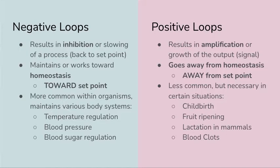Negative feedback loops are more common within organisms and maintain various body systems. Our temperature regulation, blood pressure regulation, and blood sugar regulation are all examples of how negative feedback loops help us maintain our internal environments. You may see an example of blood pressure or blood sugar regulation on an AP exam, so we're going to go over what that could look like in just a moment.